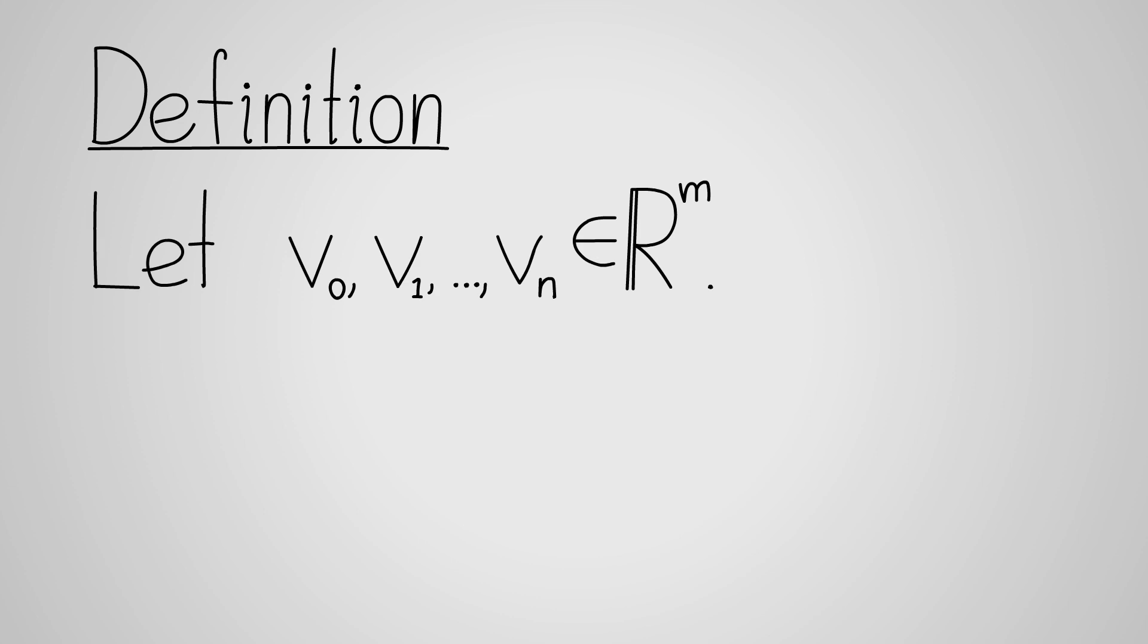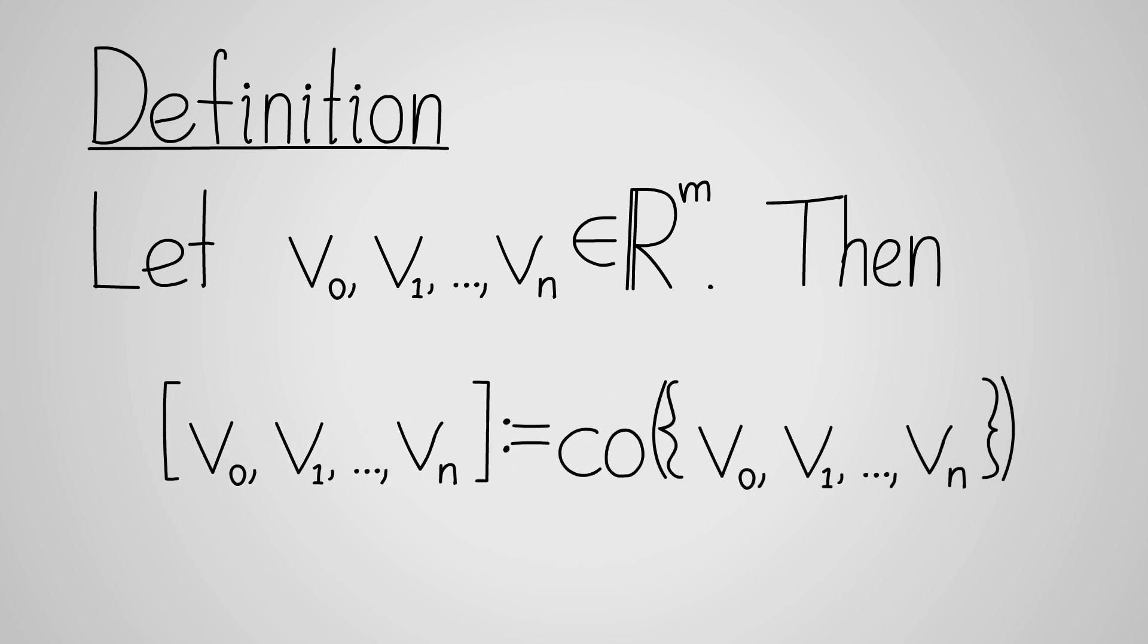Before we start looking at the boundary, I want to take a moment to introduce a new notation. If we have points V0 to Vn in some Euclidean space, and it is best for us to start the indexing at zero, then we'll list them in square brackets to denote their convex hull. This is a standard notation, and much nicer to look at than the notation we used in the last video, so I'll use it from here on.